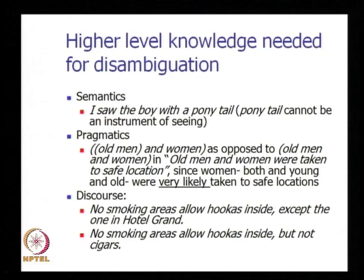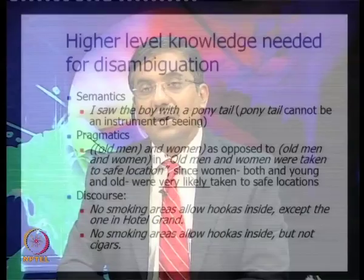Here, syntax gives two possibilities, and semantics also gives two possibilities — it does not exclude the possibility of women also being old. Up to the level of semantics, ambiguity remains. Here comes pragmatics, which says both men and women being old and being taken to safe locations is a purely pragmatic consideration, and here pragmatics is what disambiguates.